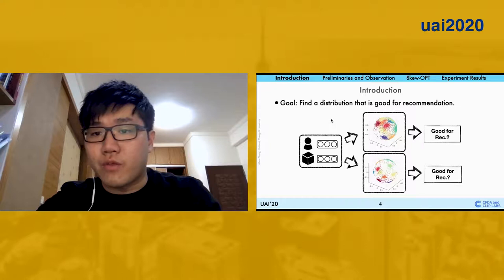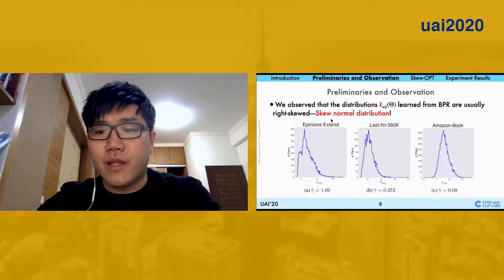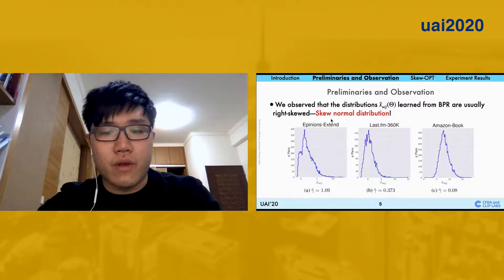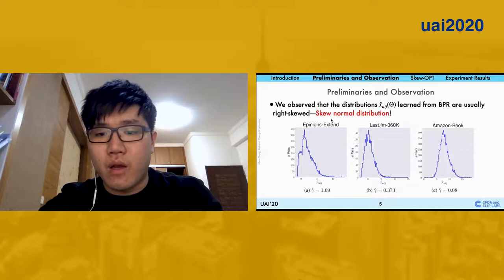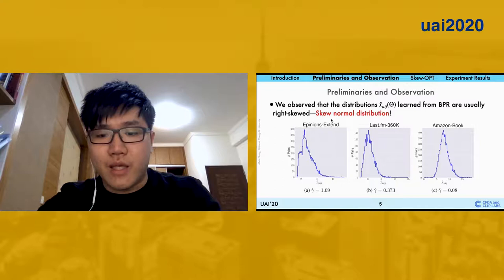In order to observe the embedding distributions, we plot out the learned PDF from BPR among three different datasets. We then observe that the learned distributions from BPR are right skew and attempt to follow the skew-normal distributions.